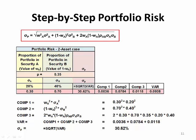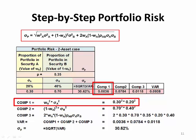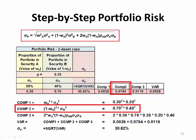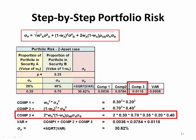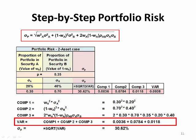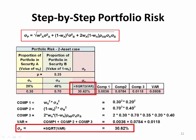Let's take a step-by-step look at one line in the table using a weight of 30% for A and 70% for B. Component 1 is the weight of A squared times the standard deviation of A squared. Component 2 is the weight of B squared times the standard deviation of B squared. Component 3 is the factor that drives the diversification benefit — it combines the weight of A, the weight of B, standard deviation of A, standard deviation of B, and the correlation between the two. Adding these three components results in the variance of 0.0938.